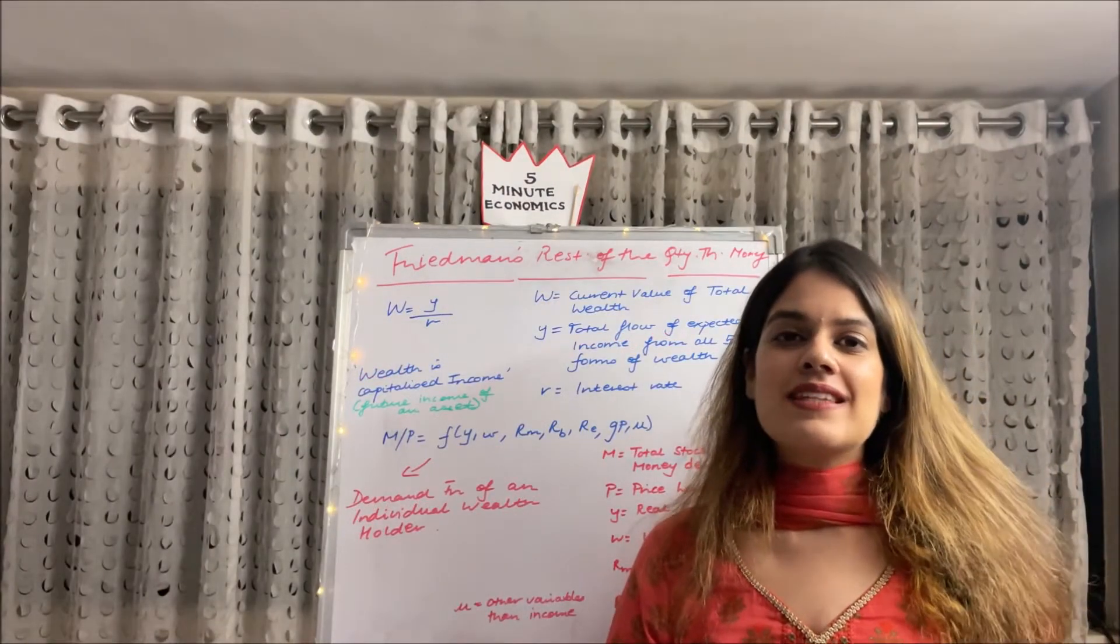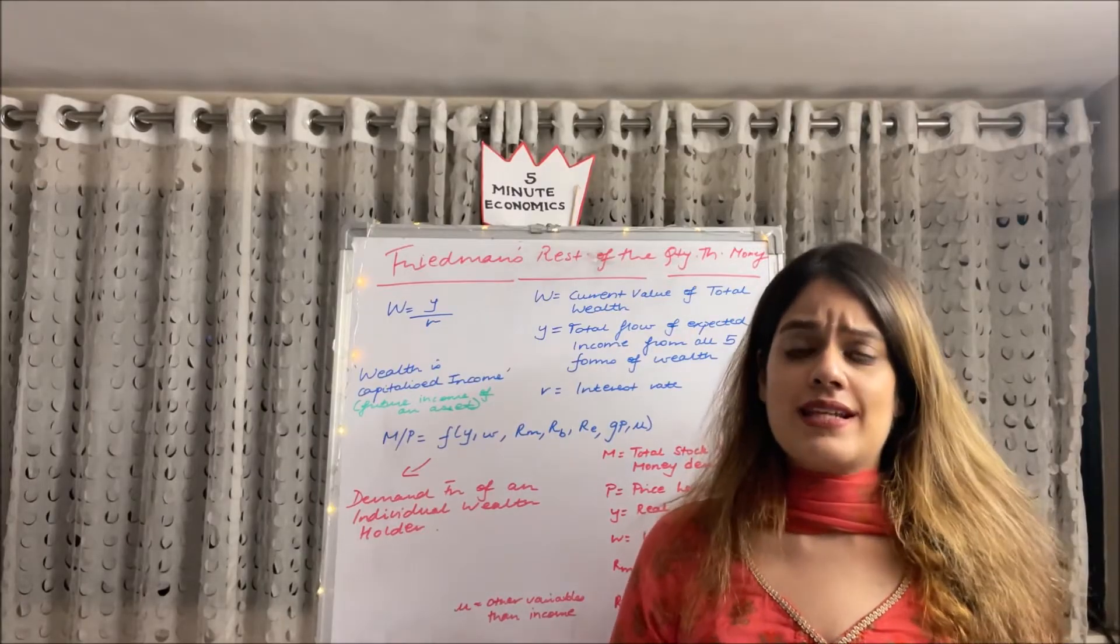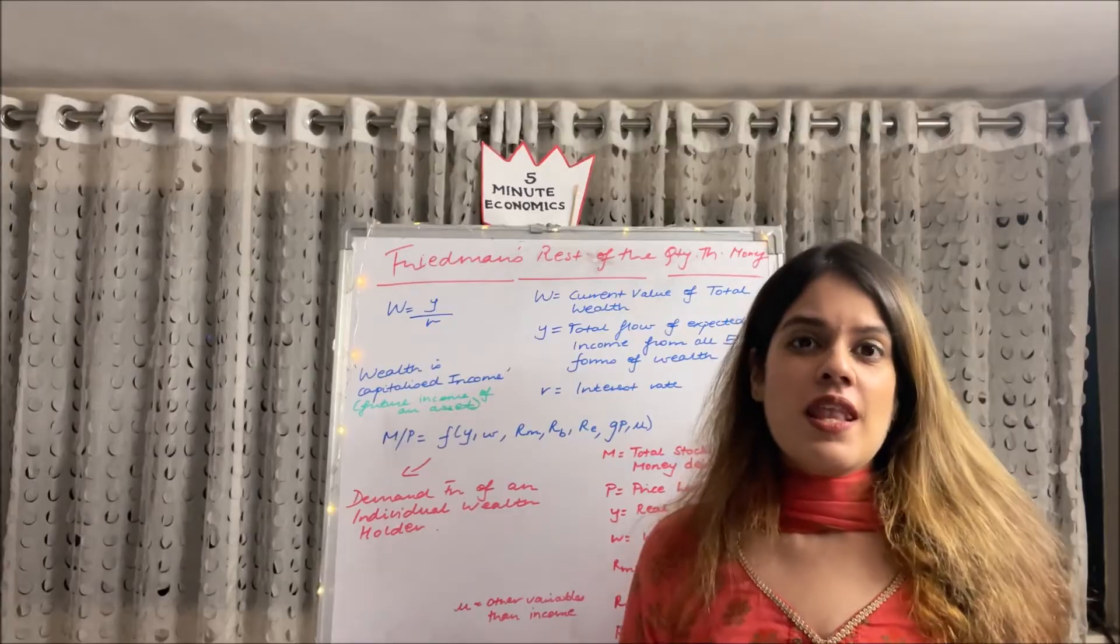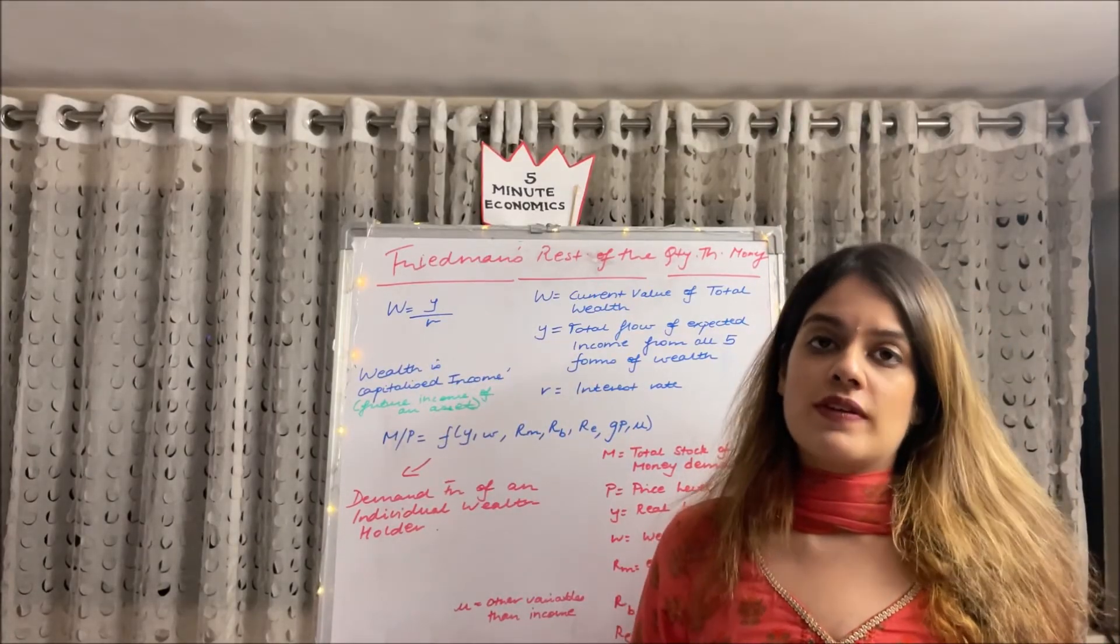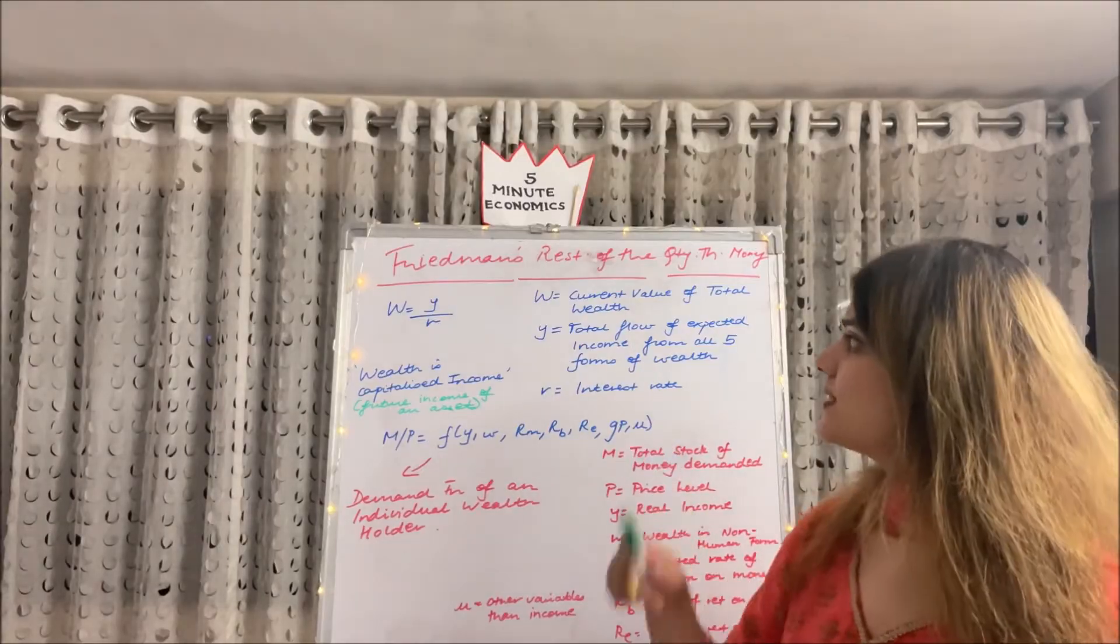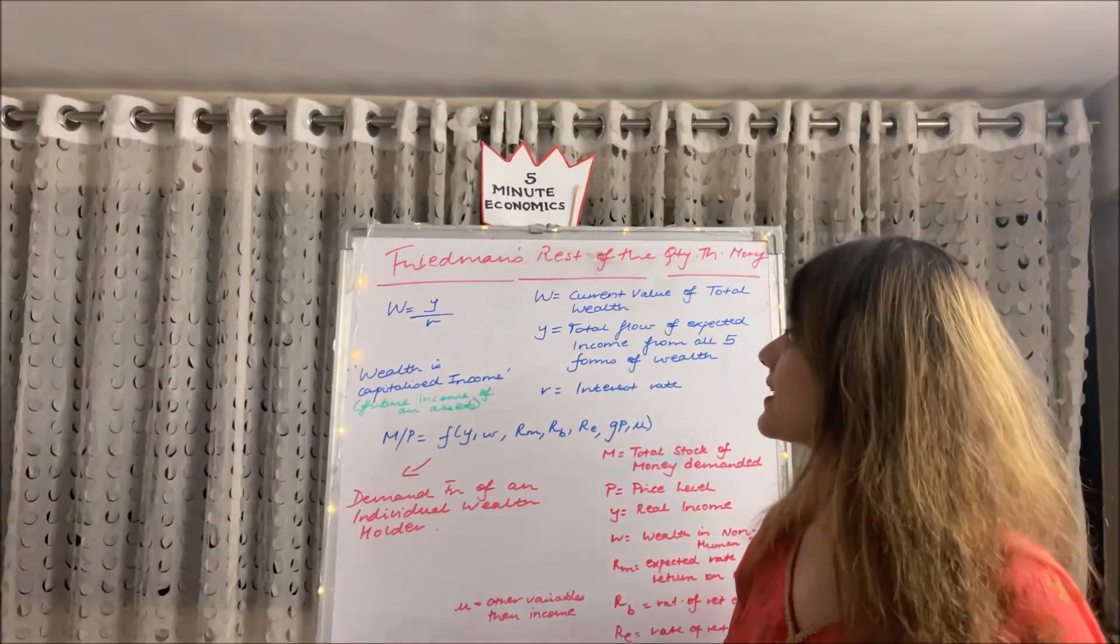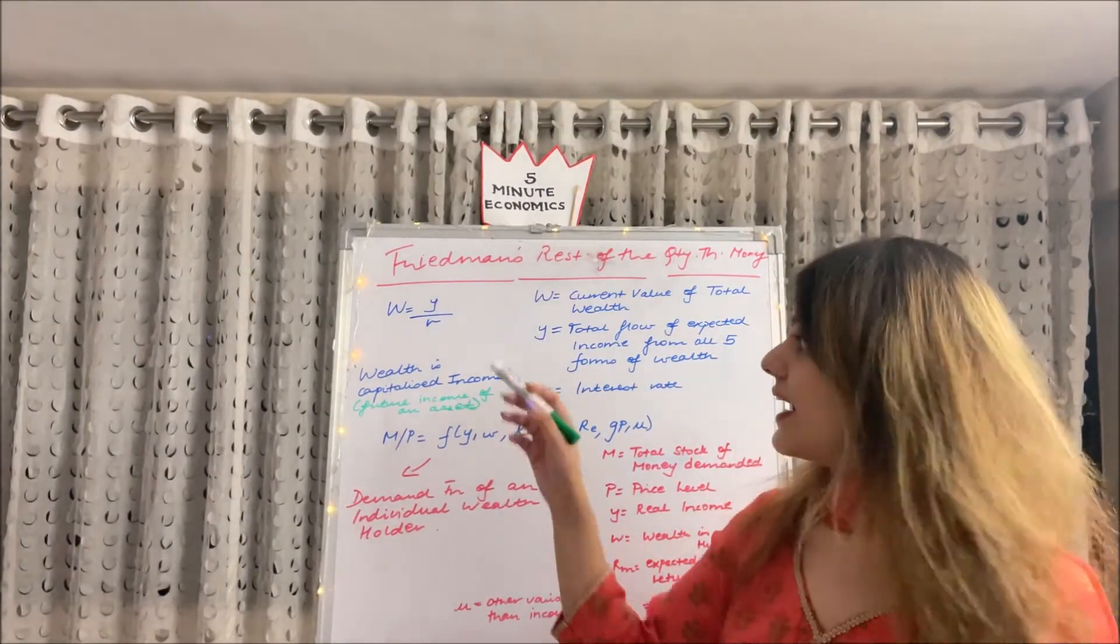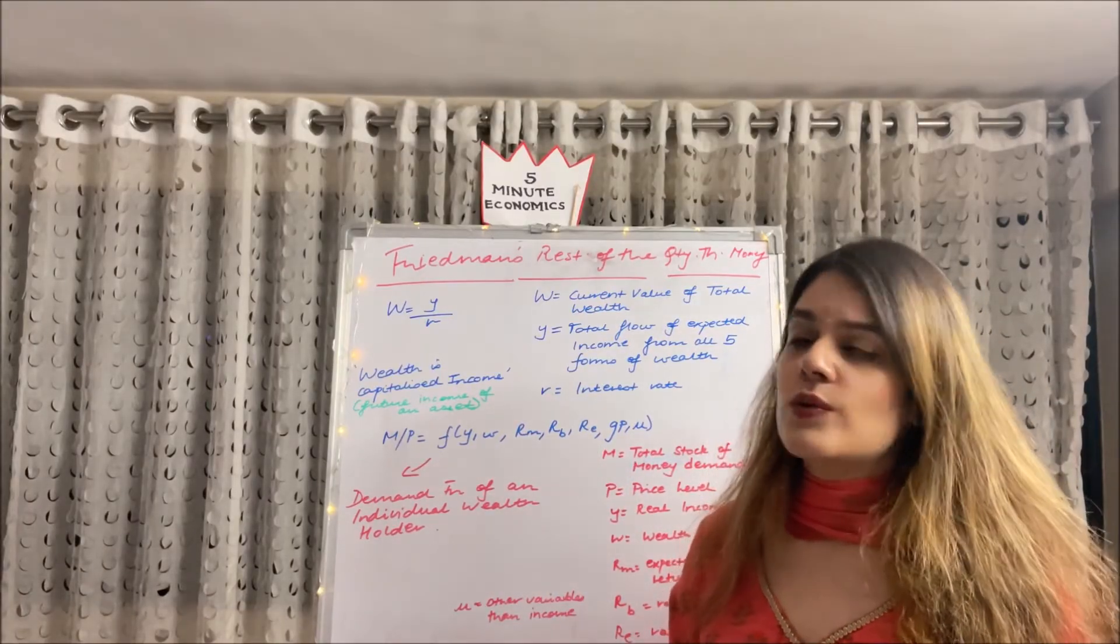So moving ahead to the next bit of this theory. Whenever you are stating this theory in an exam or any answer, you have to remember certain equations. Number one equation is W equals Y upon R, which equation was given by Friedman. Where W stands for the current value of the total wealth, and Y stands for the total flow of expected income from all the five forms of wealth which we just did, and R is the rate of interest.